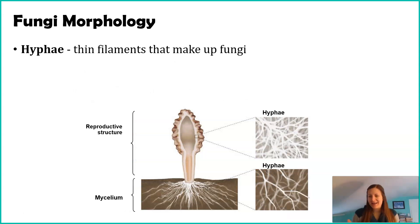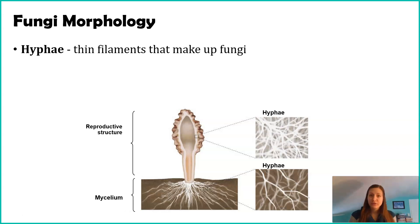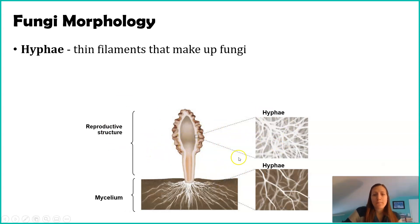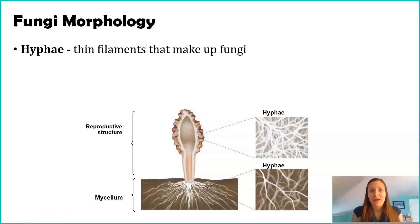Fungi are made up 100% of thin filaments called hyphae. You've probably seen hyphae before — if you've ever dug in the dirt and seen white strands, you might have thought they were roots, but they were hyphae. These thin filaments make up the fungal body both below and above ground. Above ground, these hyphae are more densely packed, so they can create a more 3D rigid structure. Underground, the hyphae still exist, but are more sparse and spread out.